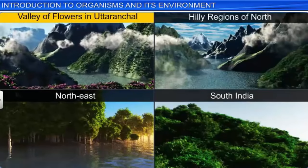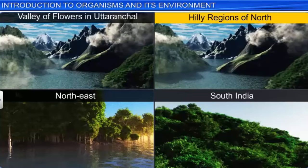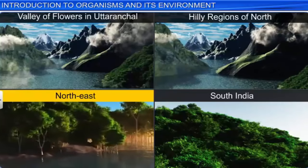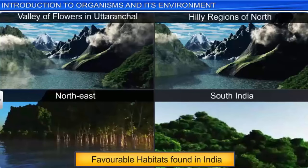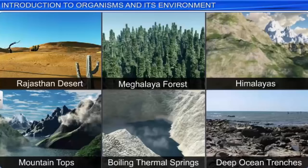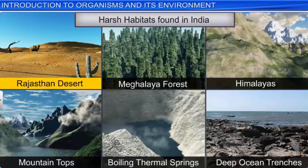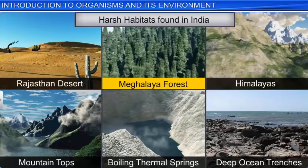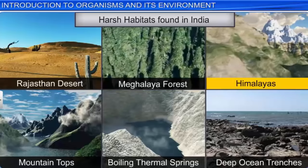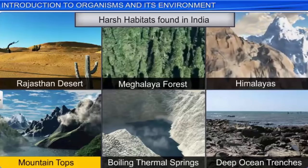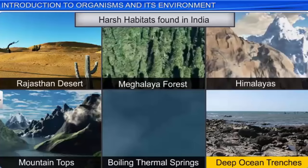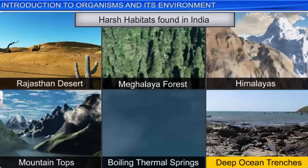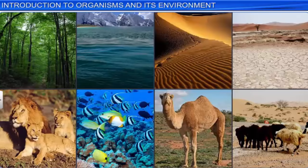Some of these habitats are favorable, while others are harsh. The Valley of Flowers in Uttaranchal and the hilly regions of North, Northeast, and South India are some favorable habitats found in India. While some harsh habitats include the scorching Rajasthan Desert, perpetually rain-soaked Meghalayan forests, permafrost regions in the Himalayas, mountain tops, boiling thermal springs in Uttaranchal and Sikkim, and deep ocean trenches in the Indian Ocean. Life exists in all these habitats, regardless of whether they are favorable or harsh.